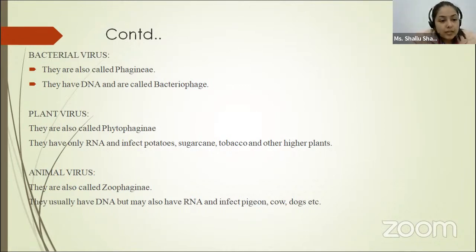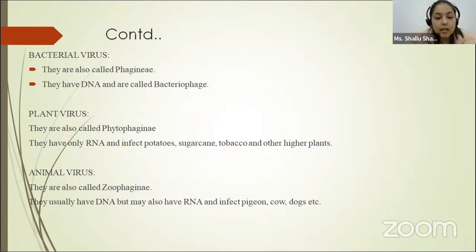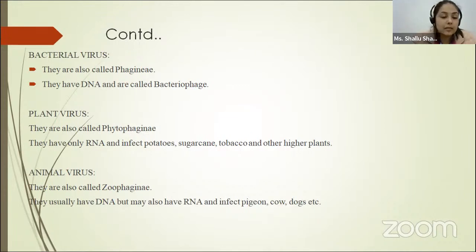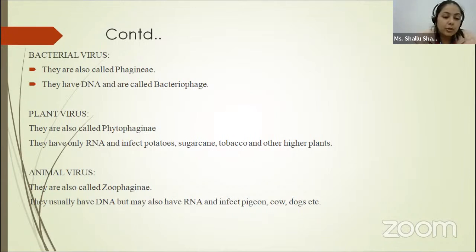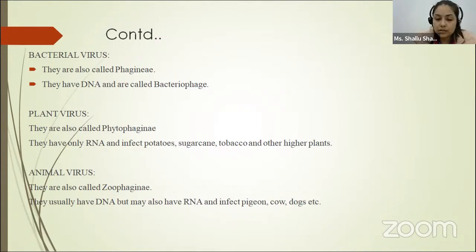Plant viruses are called phytophaginae. They have only RNA, not DNA, and they can infect potatoes, sugarcane, tobacco, and other higher plants. Animal viruses are also called zoophaginae. They usually have DNA but may also have RNA, and they infect pigeons, cows, dogs, etc.